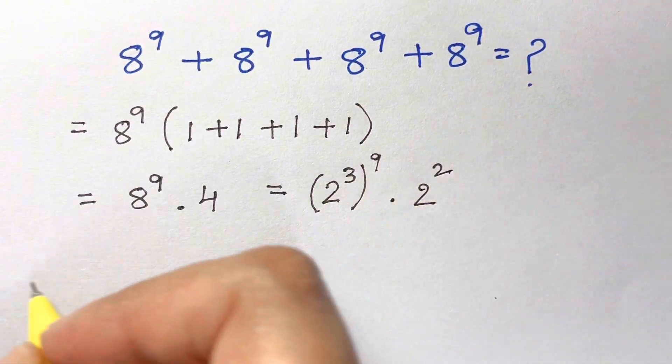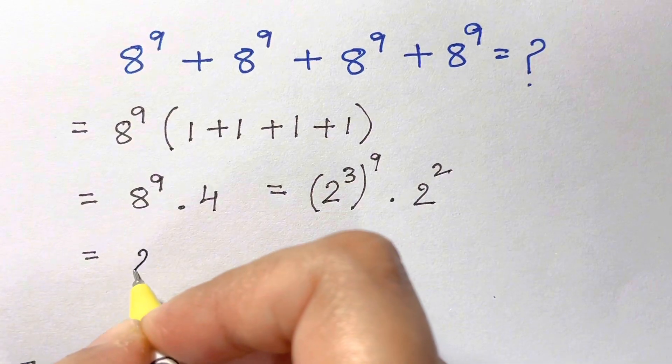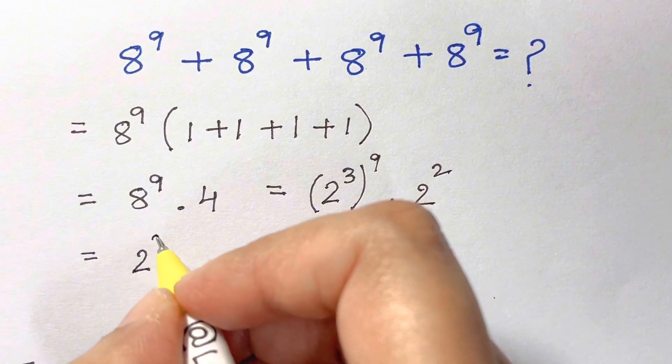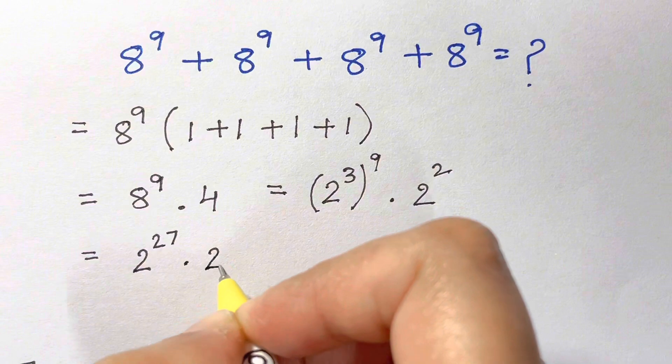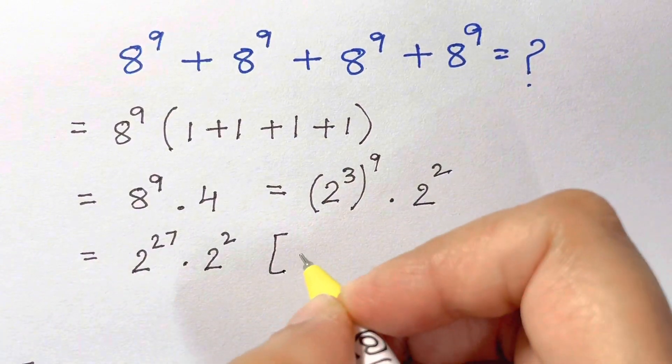Now when you have power to power you can multiply the powers so we'll have 2 to the power of 3 times 9 is 27 times 2 squared. Now we're going to apply this law a to the power of m times a to the power of n is equal to a to the power of m plus n.